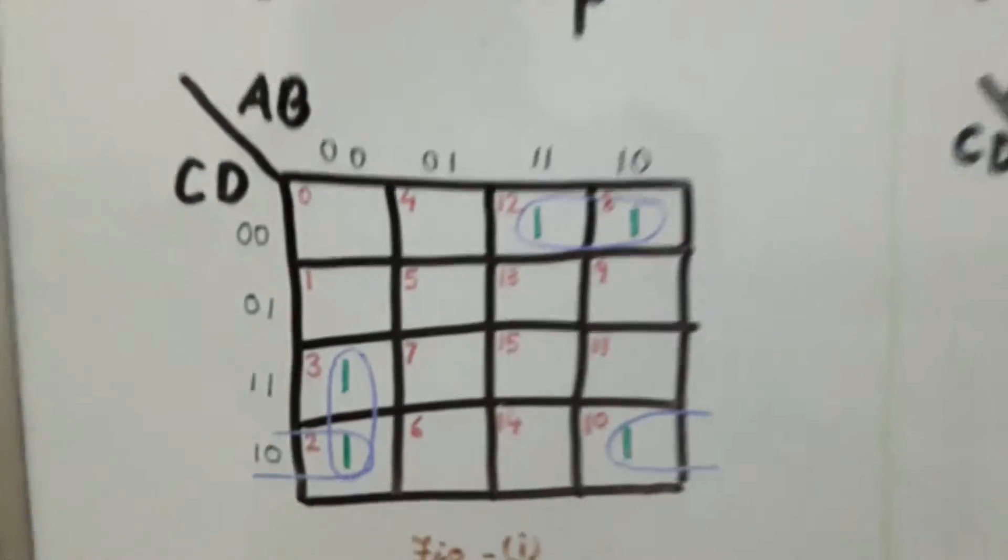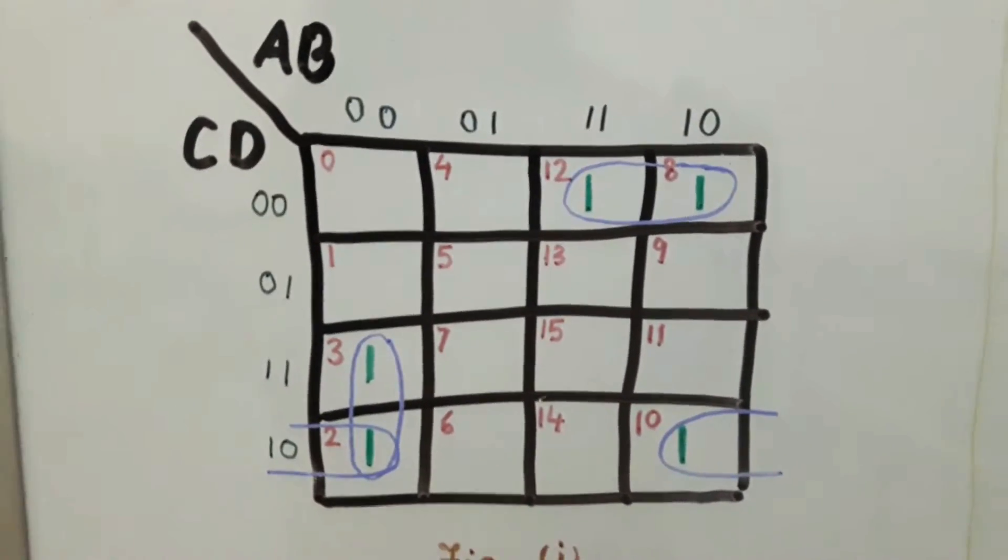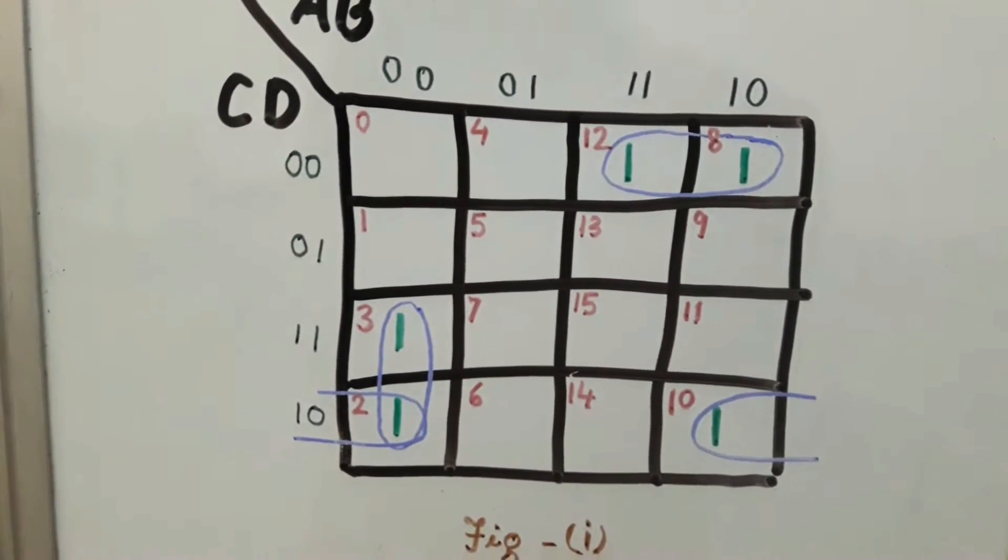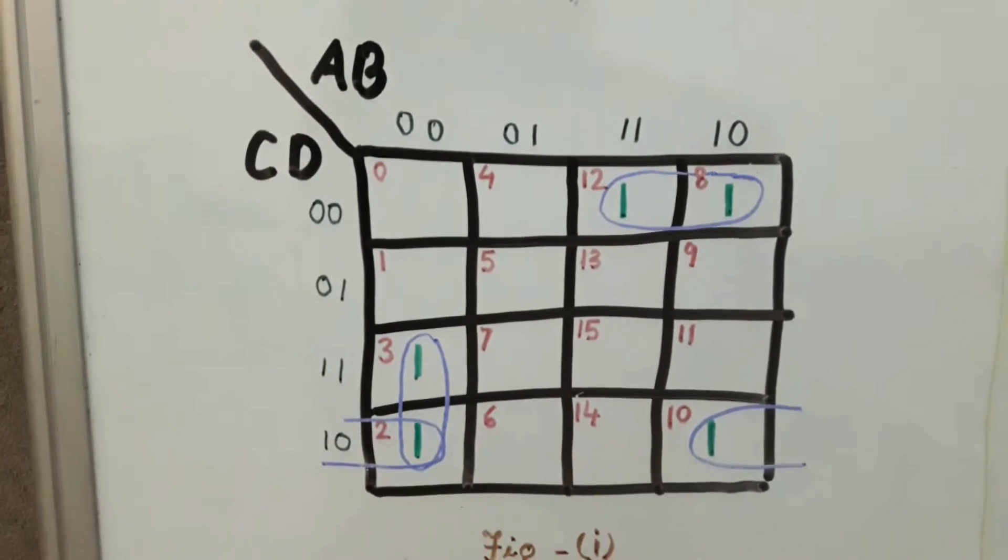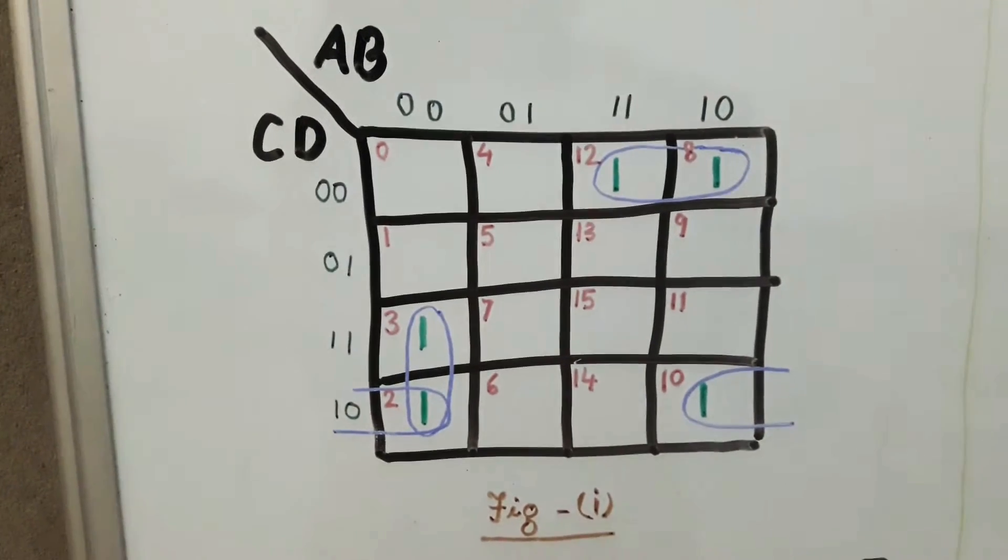From figure 1 we find that the minterms are present at 2, 3, 8, 10, and 12. So we have drawn the K-map accordingly.